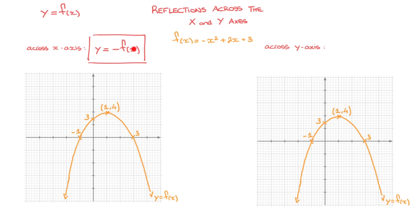In other words, it's not inside these parentheses here. Remember, any change that we make on the outside of the function will be a vertical transformation and will therefore affect its y-coordinates. The way this transformation works is by changing every single y-coordinate of this curve into its opposite. So for instance, the vertex has coordinates 1, 4. Following this transformation, its y-coordinate, 4, will turn into its opposite, which is negative 4.